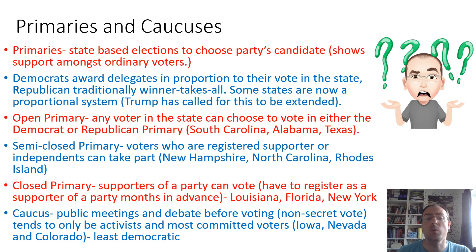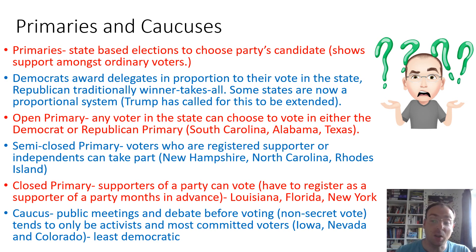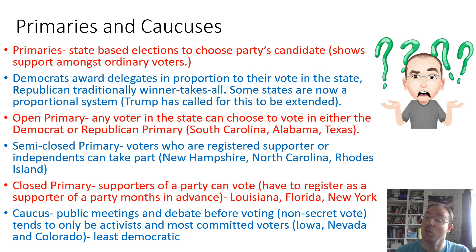We get different types of primaries. In an open primary, any voter in the state can choose to vote in either the Democrat or Republican primary — this happens in South Carolina, Alabama, and Texas. You have semi-closed ones where registered supporters or independents can take part, and that happens in New Hampshire, North Carolina, and Rhode Island. With open and semi-closed primaries, you can get some slightly odd results — negative voting where a Democrat supporter might vote for a Republican candidate they think will be really unattractive to the electorate, though they'd lose their opportunity to vote in the Democrat primary.